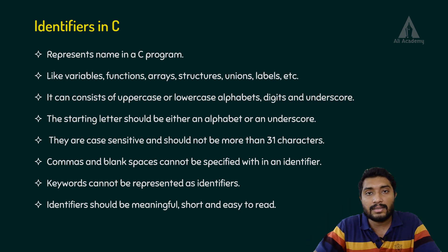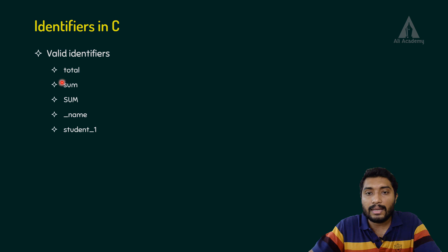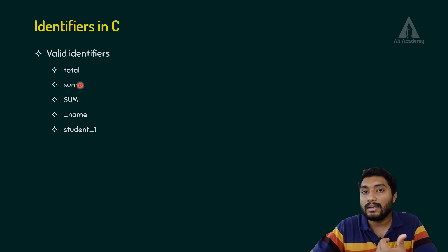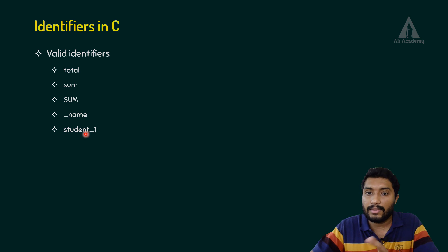If you look here, these are examples of valid identifiers: 'Total'. These two are different identifiers due to case sensitivity. If you start with an underscore, let's start with an underscore — we can separate words, like 'student_number' or 'student_name' to separate columns. Note that whitespaces and commas are not allowed.